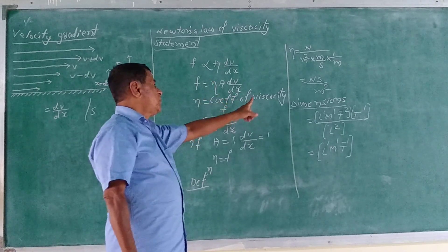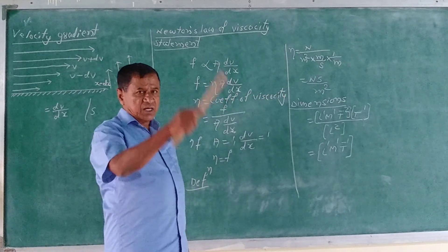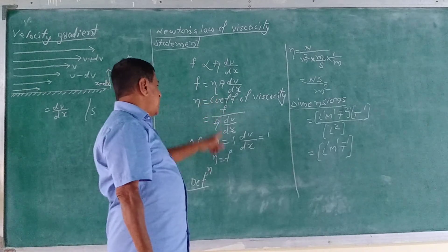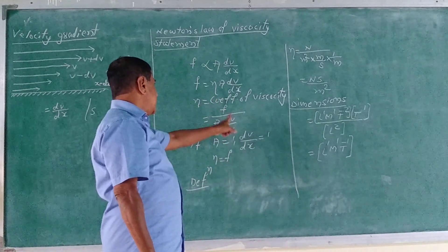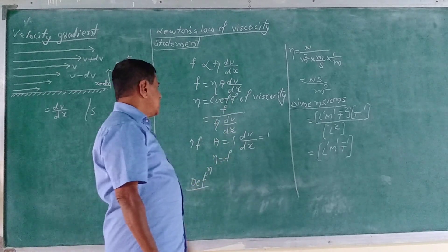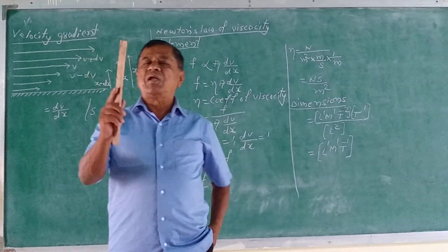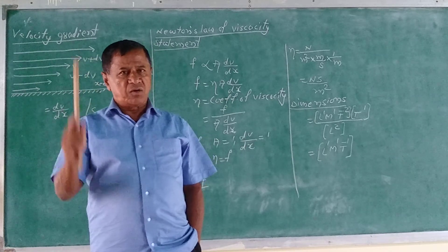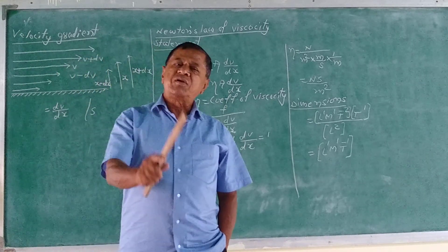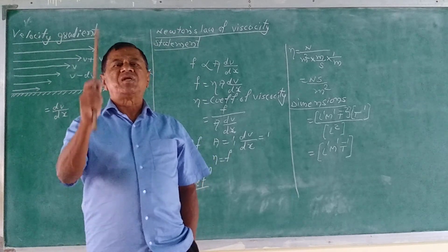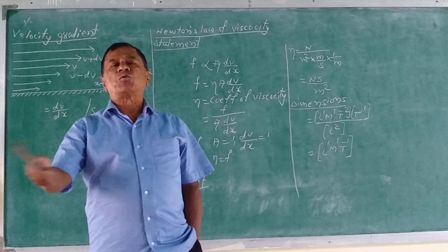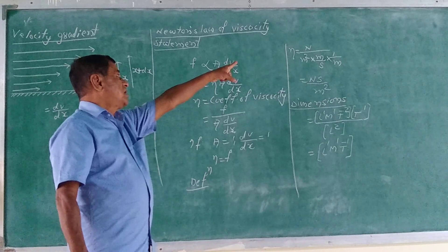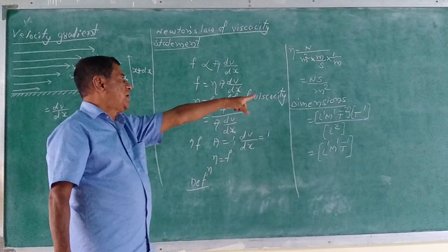The coefficient of viscosity is defined as the viscous force per unit surface area per unit velocity gradient. The SI unit is Ns per m² and the dimension is M¹L⁻¹T⁻¹.